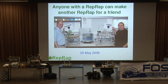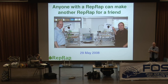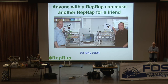The key point is that the machine is capable of printing out a significant fraction of its own parts, which means that any one of you who've got one can print out another one for a friend. And because it's free under the GPL, you don't have to pay any license fees. You just give it to your friend, and then your friend has the ability to print out all those objects we saw on the previous slide, and lots of other things besides.